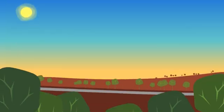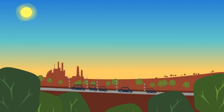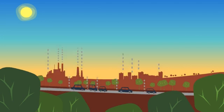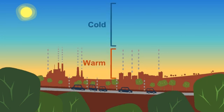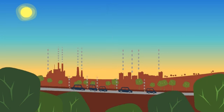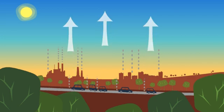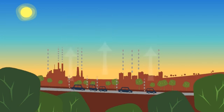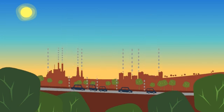In the city, air pollution is caused by transportation, industrial activity, and wood heating in homes. Normally, the air near the ground is warmer than the air higher up. Since warm air is lighter than cold air, it rises. So air pollutants rise with the warm air and are blown away by the wind.